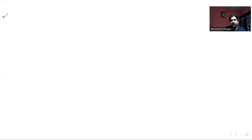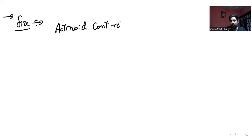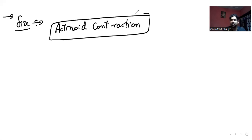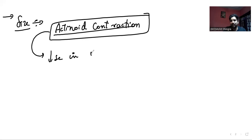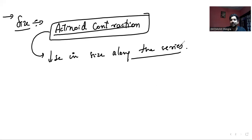The next property we have to discuss is about size. In lanthanoids, we have studied lanthanoid contraction. Similarly, in actinoids, what exists? Actinoid contraction. Similar to lanthanoid contraction in lanthanoids, actinoid contraction is seen in actinoids. Actinoid contraction is that decrease in size along the series, which is seen in actinoids.